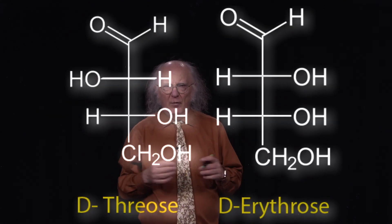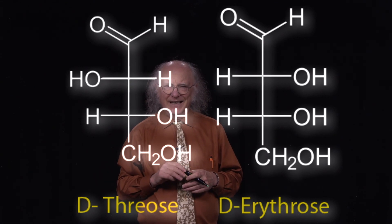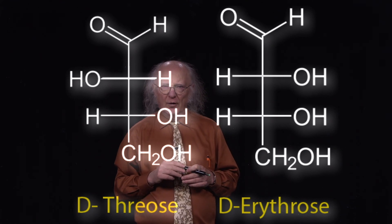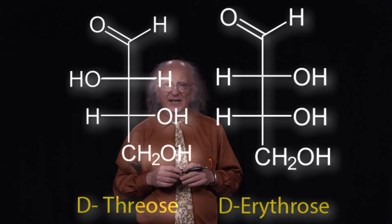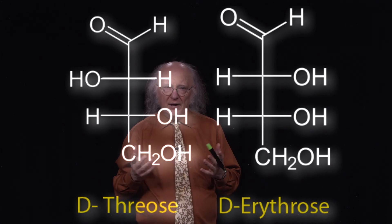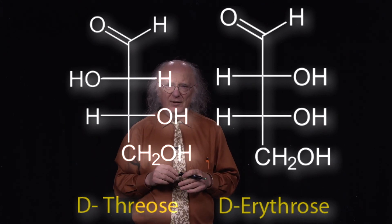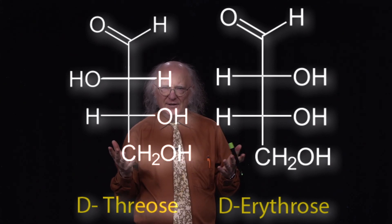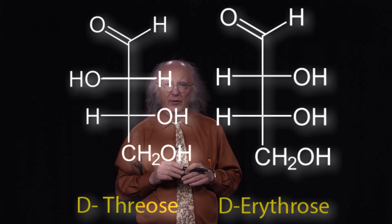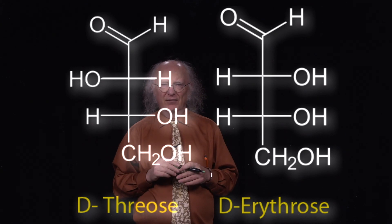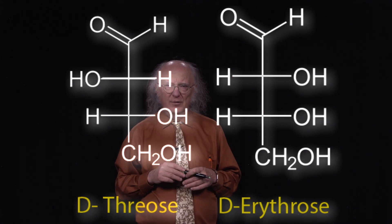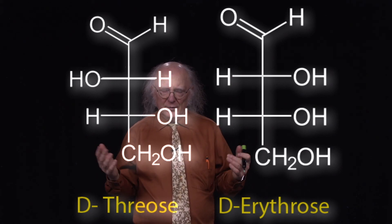Another term about sugars is diastereomers. This shows two different tetroses — sugars that have four carbons. They're both also aldoses because you can see the aldehyde structure at the very top. But these sugars are not mirror images of each other, so we can't call them enantiomers. When two sugars have the same number of carbons and the same basic chemical form but are not mirror images of each other, we call them diastereomers. These two sugars, D-threose and D-erythrose, are diastereomers of each other.